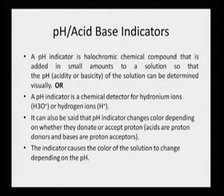A pH indicator changes color depending on whether it donates or accepts protons — acids are proton donors and bases are proton acceptors. The indicator causes the color of the solution to change depending on the pH. As the pH is increased it should have one color, and as the pH is decreased it should have another color, and this can go on as many times as desired. Only then will a dye be considered a good candidate for a pH indicator.